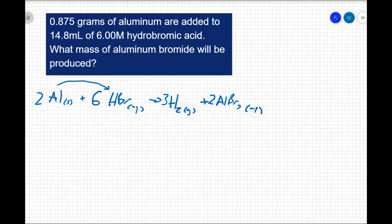Second step is I'm going to convert to moles. Well, I have 0.875 grams of aluminum, and the molar mass of aluminum is 27 grams, so one mole is equivalent to 27 grams. Cancel out my grams, and that gives me 0.0324 moles of aluminum.